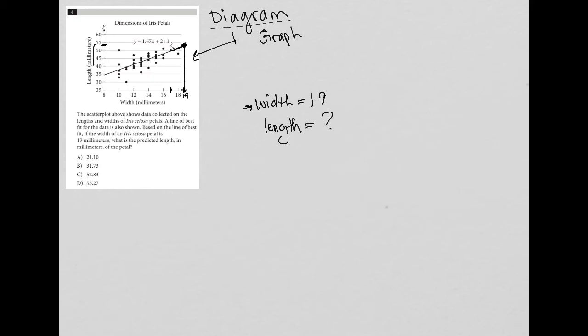I look at my answer choices. There's no way that it's 21.1. There's no way that that is 31.73. 52.83 is really great, right? Because I thought it'd be 53, 54. So I really like answer choice C based upon the graph.